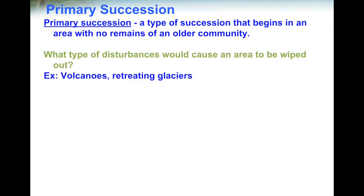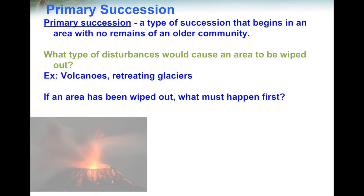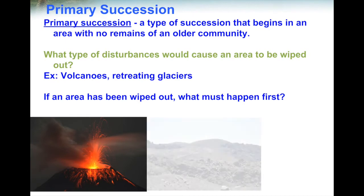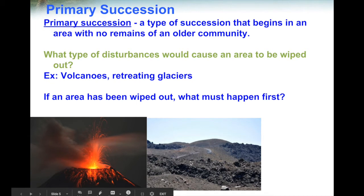An example of primary succession would be a volcano erupting. All the lava that comes out of the volcano, once it goes onto the land and cools off, will kill everything that's there. Plants will die. When the lava settles and cools, it actually forms into rocks. Animals that are able to get away will leave. After a volcanic eruption, there's nothing there — not even soil is left.